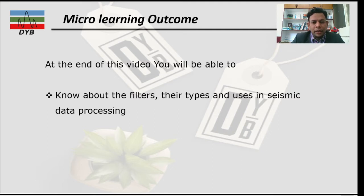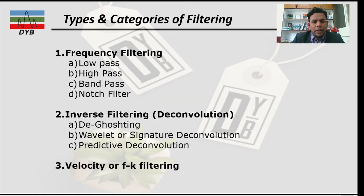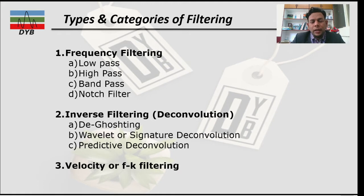The filters have been categorized based on different phenomena such as frequency, inverse filtering, and velocity or FK filtering. Focusing on frequency filtering, we have four types: low pass, high pass, band pass, and notch filter. These filters can also be called high cut, low cut, or use the same band pass terminology.